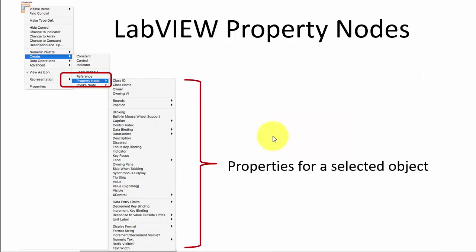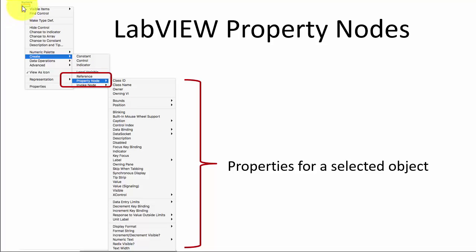If you want to set these properties from code instead, you can use property nodes. Go to the block diagram, right-click on the same object, select Create Property Node, and you will get a list of all the properties you can set on that particular control. If you do this on a different control, you typically get a different list, since each object has different kinds of properties.